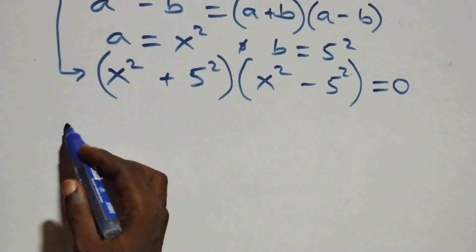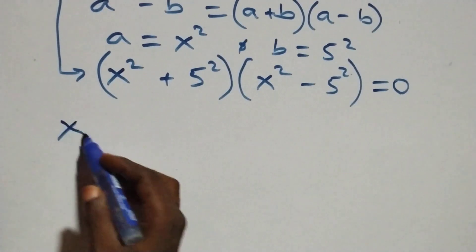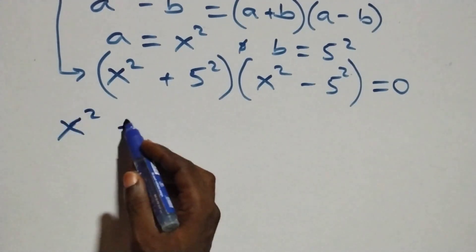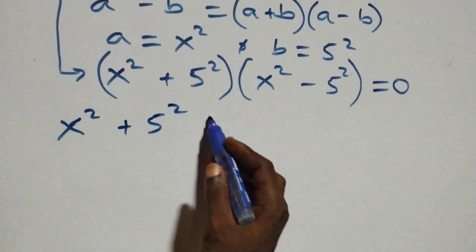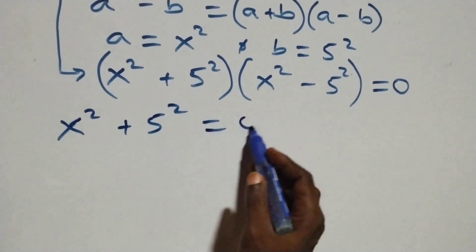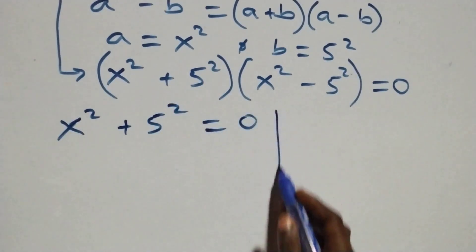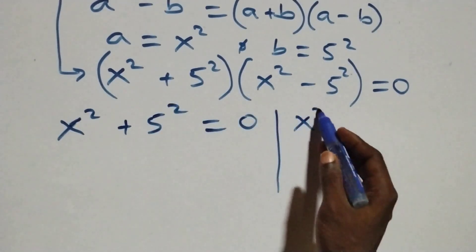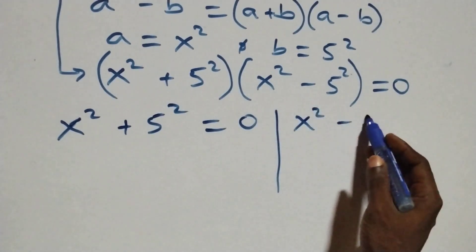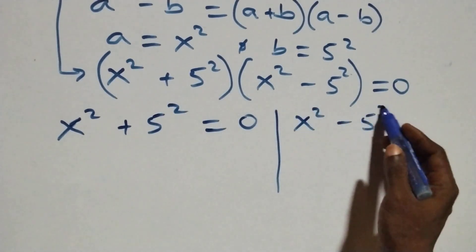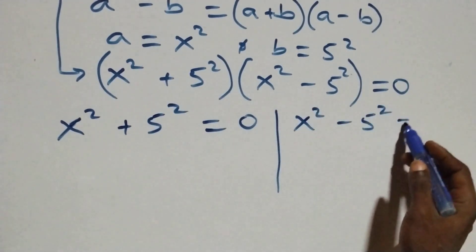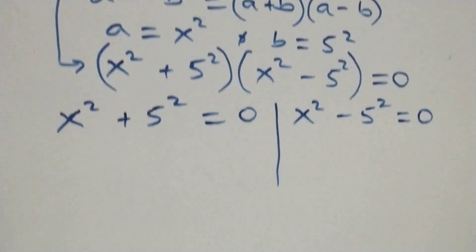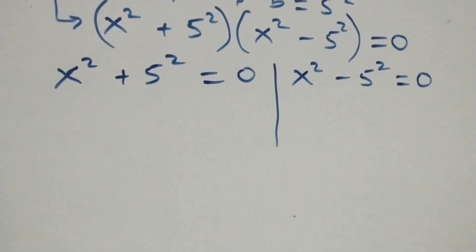We have two possible cases: the first one is x squared plus 5 squared equals 0, or we have x squared minus 5 squared equals 0.